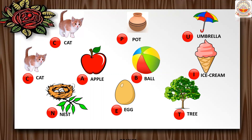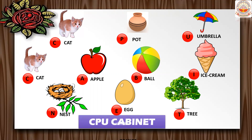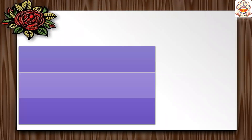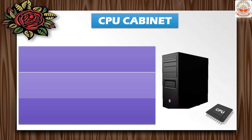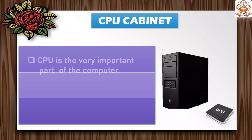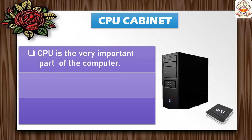The letters form C-A-B-I-N-E-T — cabinet. So the word formed is CPU cabinet. This is another computer part. The picture shown here is a CPU cabinet, which is a very important part of the computer.